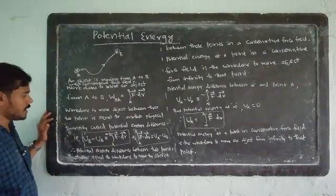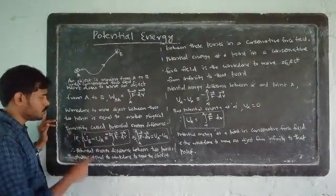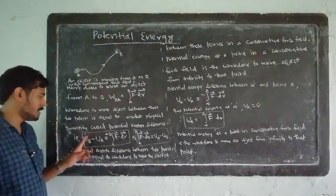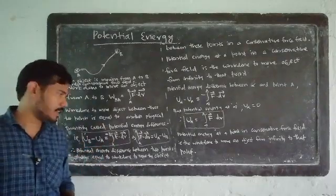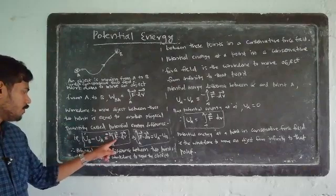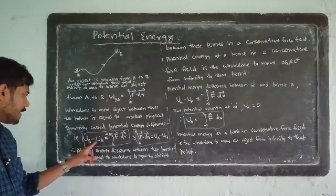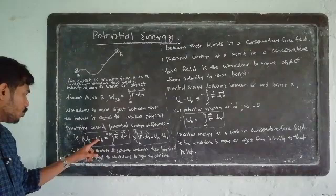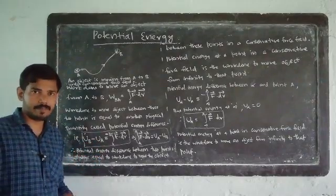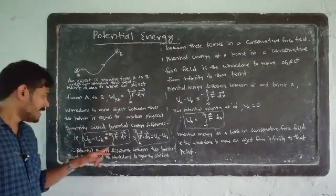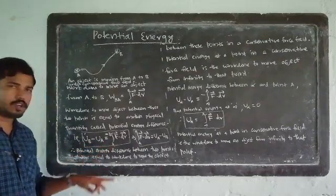So UB minus UA is equal to the integral from A to B of F dot dR. Also, KB minus KA is equal to integral A to B of F dot dR.